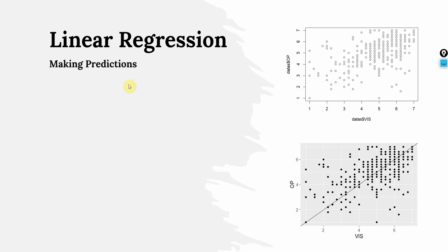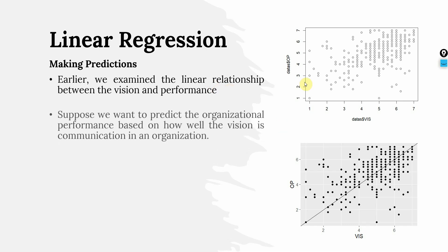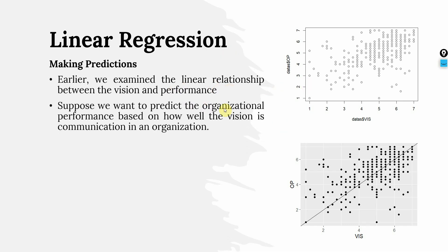So how do we make the predictions? Earlier we examined the linear relationship between vision and performance. Suppose we want to predict organizational performance based on how well the vision is communicated within the organization.